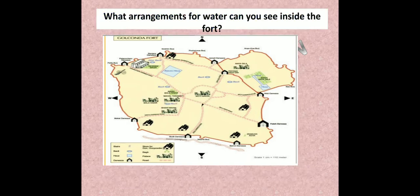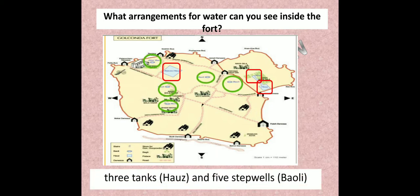What arrangements for water can you see inside the fort? Can you see the blue colored things? These are the tanks — 3 tanks — and these are 5 bauli. So in all there are 3 tanks and 5 step wells, that is bauli.